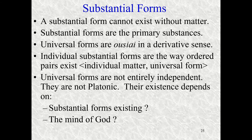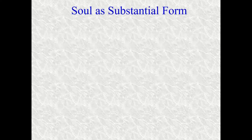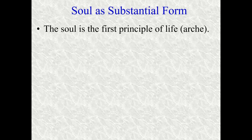Universal forms for Aristotle are not entirely independent — they don't exist in some other realm, completely abstract on their own. They're not Platonic. Aristotle gives hints that their existence might depend on substantial forms existing, or perhaps on the mind of God, which holds universal forms, and when they are joined with particular matter we have the substantial forms. Another term for a substantial form, when talking about living entities, is a soul — the first principle of life, what makes something a living thing.